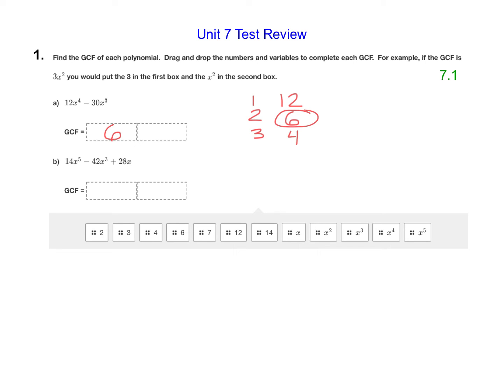And now for the GCF of the variables, it has to be how many x's they have in common. So this one has x to the fourth, that's four x's multiplied together. And this one has x to the third, which is three x's multiplied together. It's always going to be the smallest exponent on the variable. So that would make it x to the third. So you'll drag and drop those into the boxes.